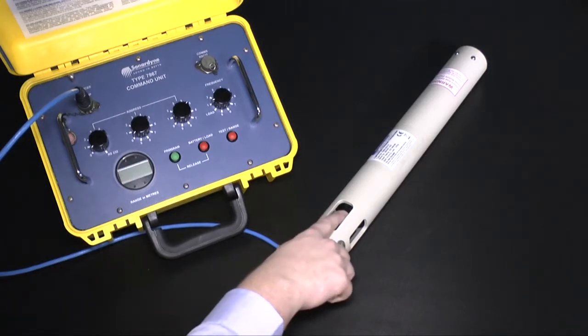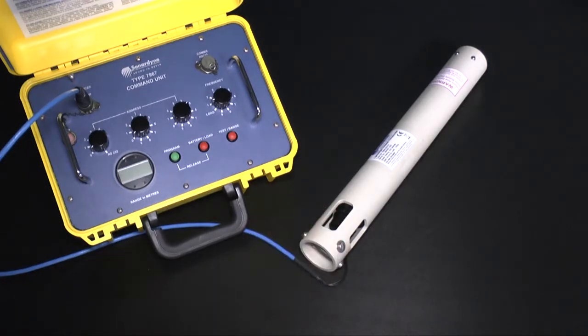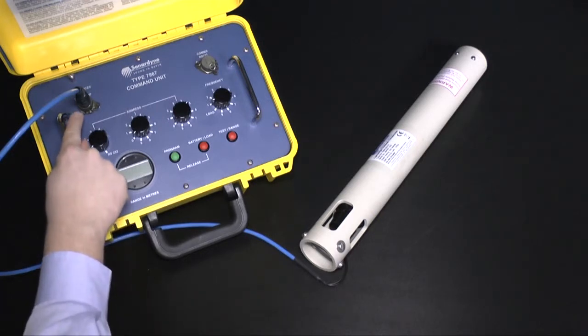First, connect the loop end of the test lead directly to the transducer on the LRT. Connect the other end to the command unit.